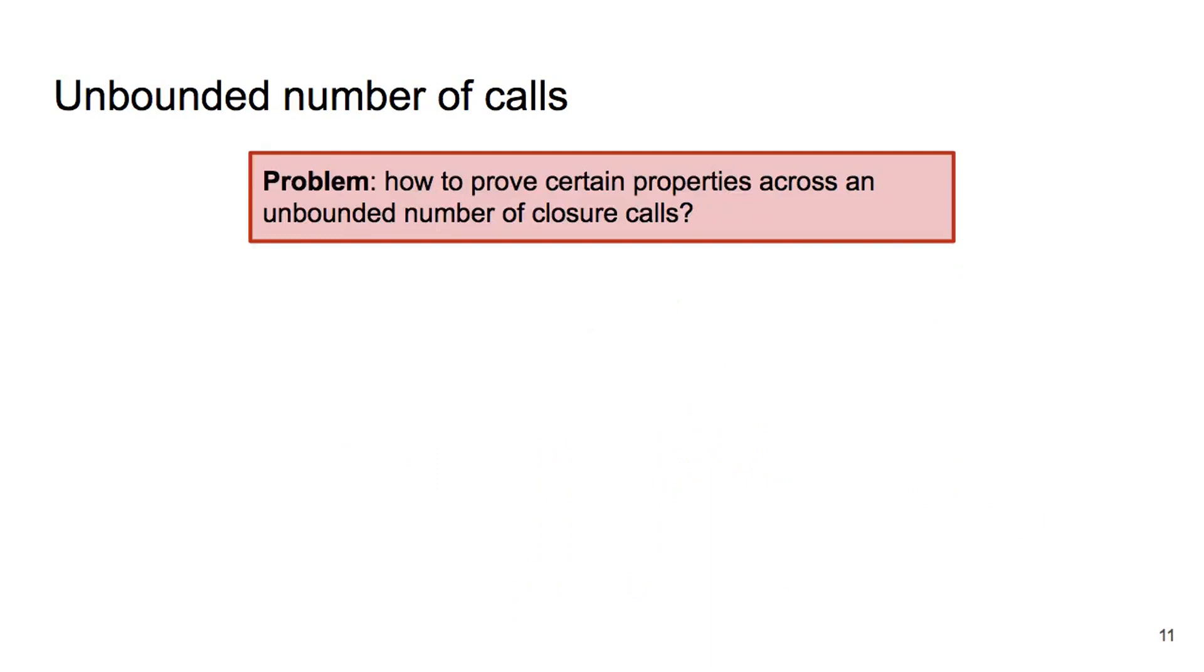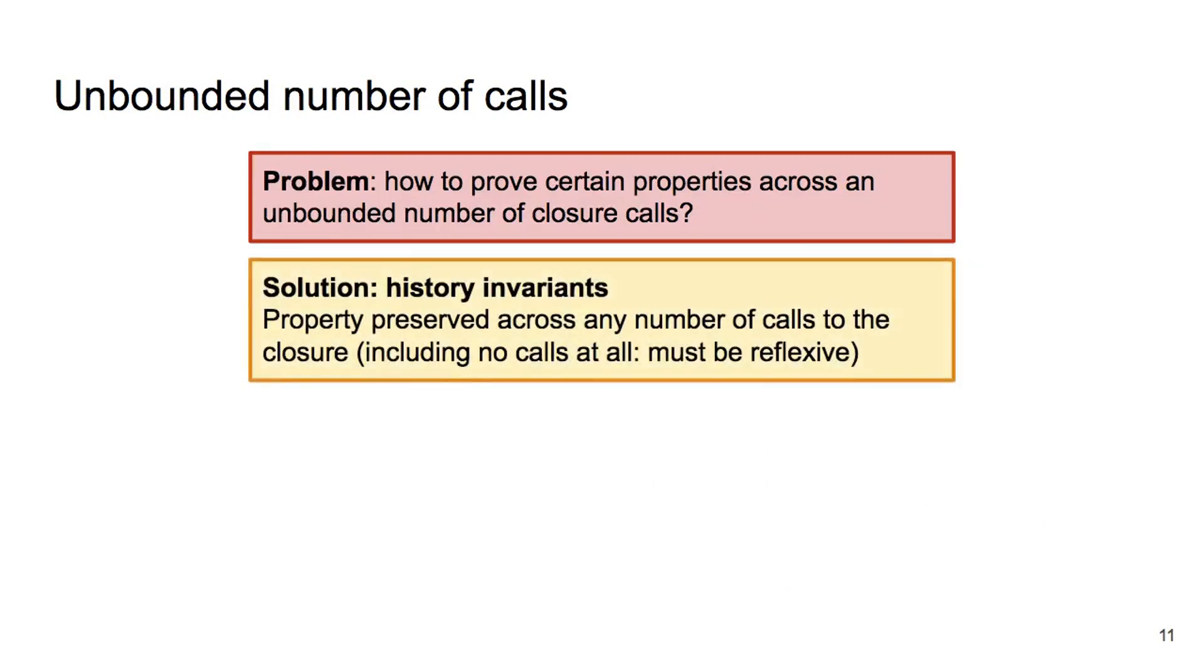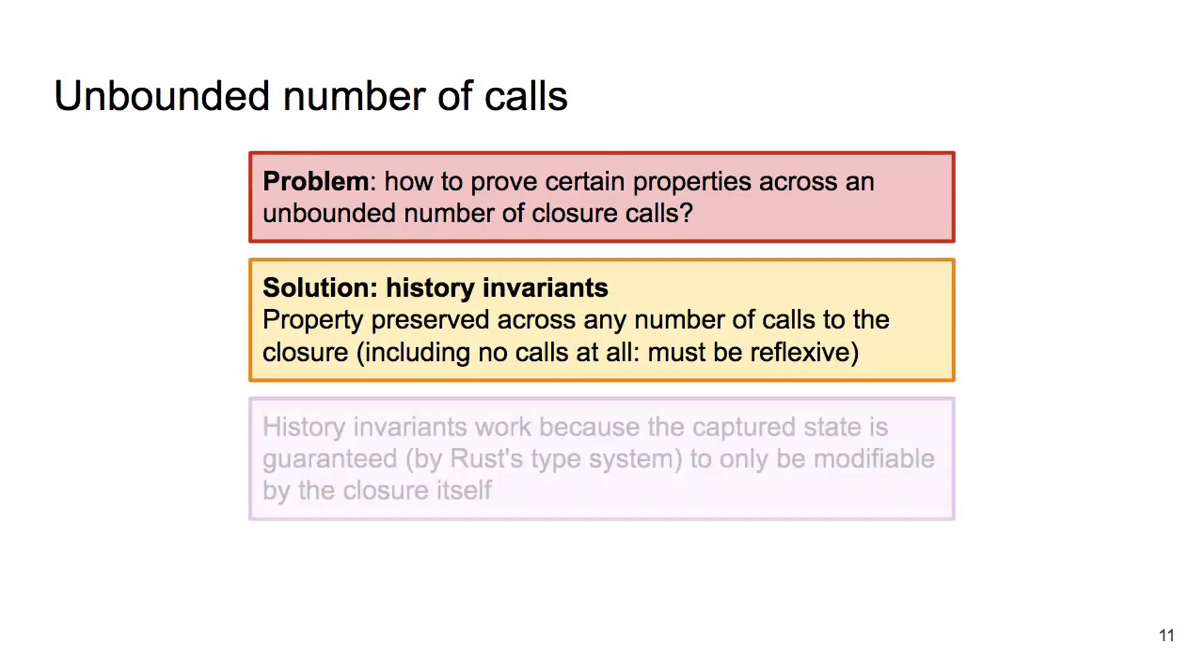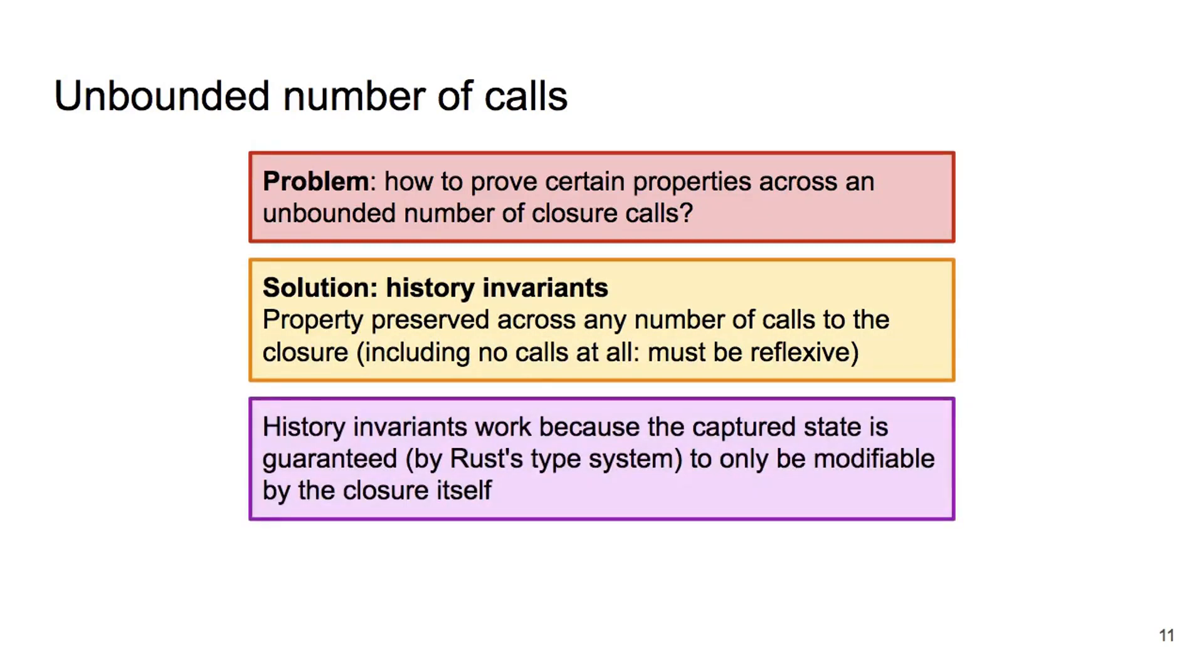To summarize, we wanted to prove properties preserved across an unbounded number of closure calls. We have used history invariants to achieve this. Note that the history invariants only work because of the guarantees of Rust's type system, namely that the captured state is only modifiable by the closure itself.